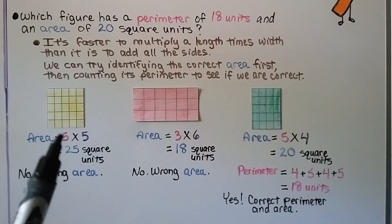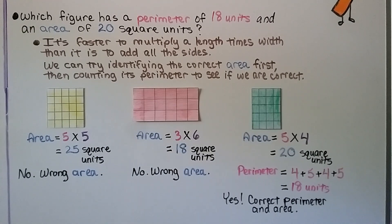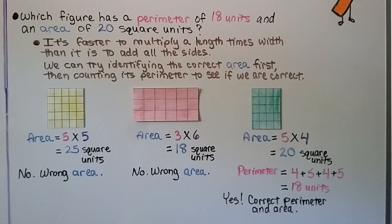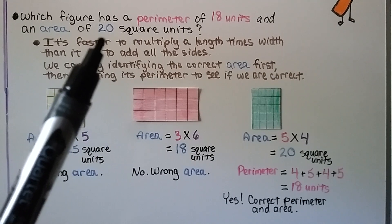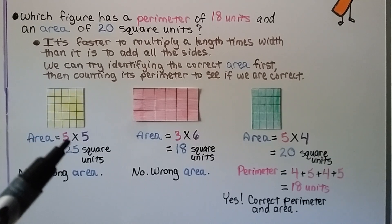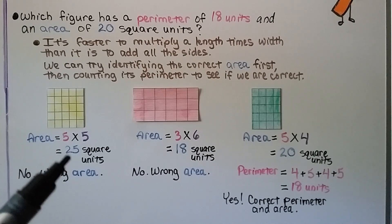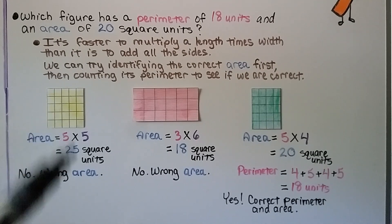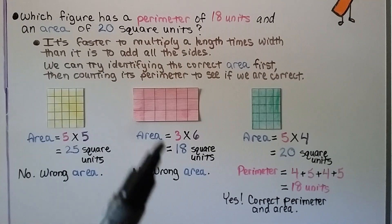Here we have a yellow figure, a dark pink one, and a green one. Which figure has a perimeter of 18 units and an area of 20 square units? It's faster to find area first, then check perimeter. The yellow figure has sides of 5 and 5, so 5 times 5 equals 25 square units — that's not 20, so it's eliminated. The dark pink figure has an area of 3 times 6 equals 18 square units — also not 20, so it's eliminated.